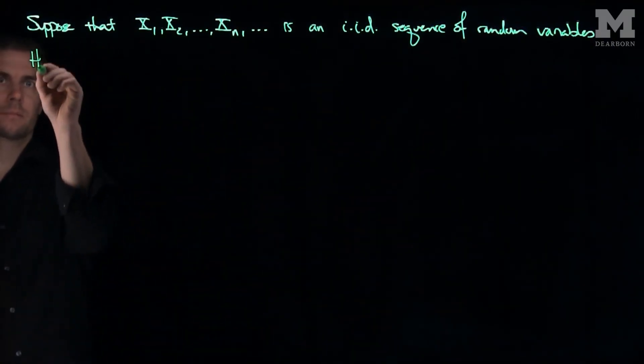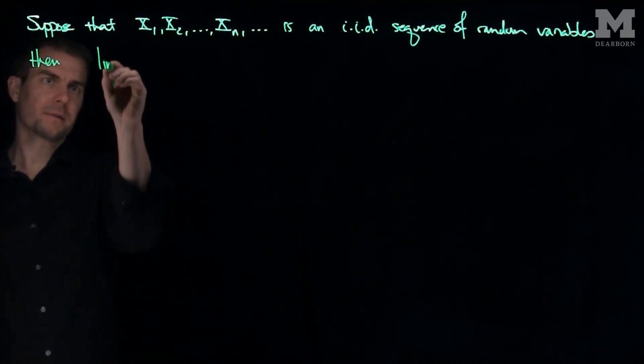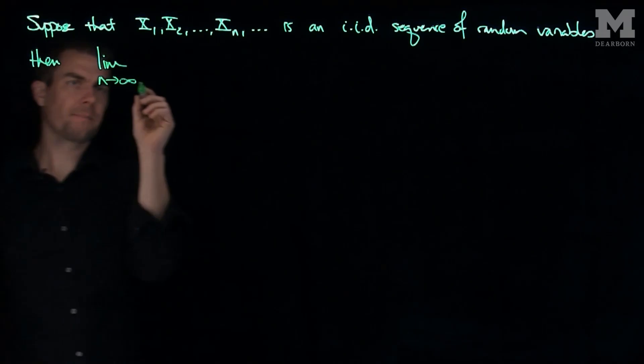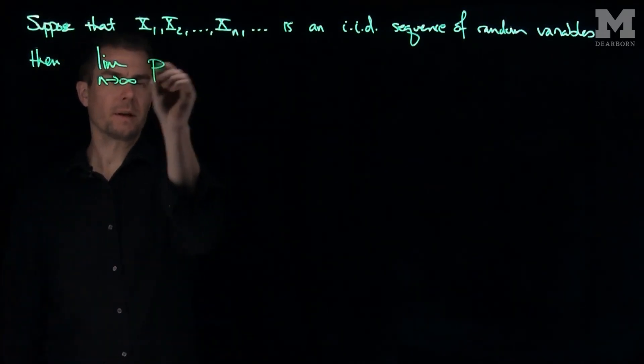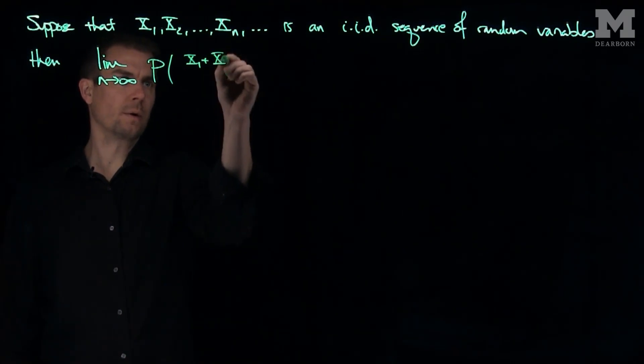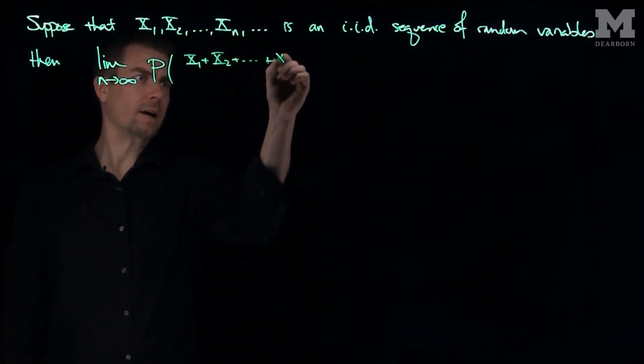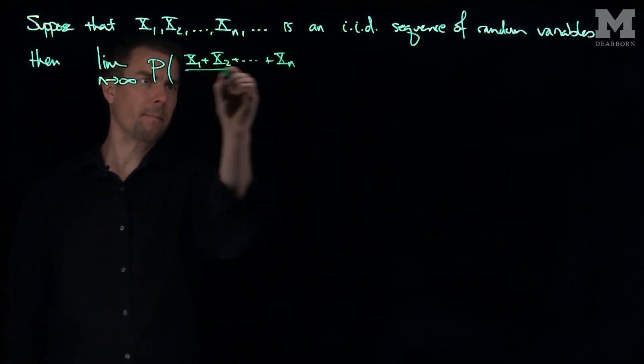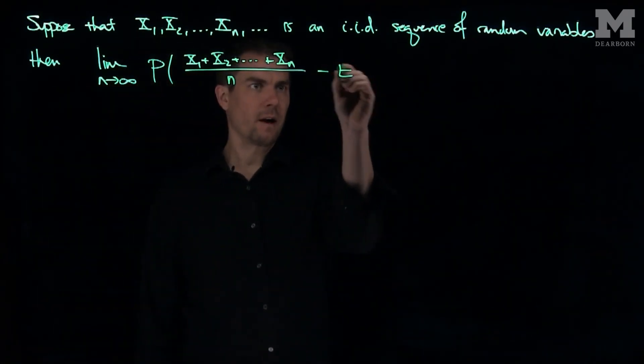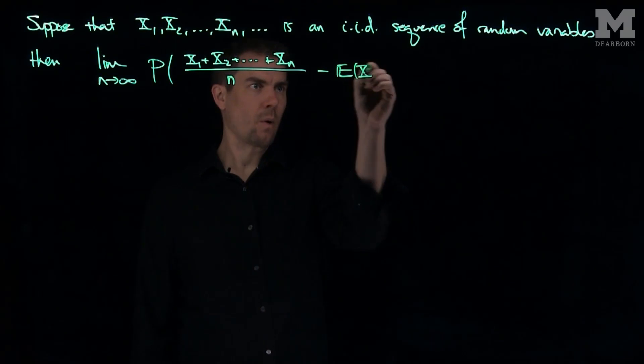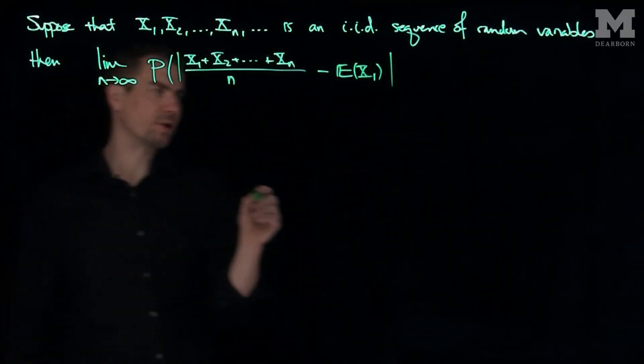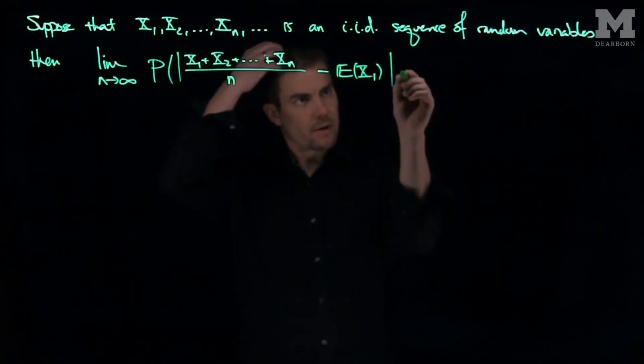Then the limit as n goes to infinity of the probability that x1 plus x2 plus xn, so the sum of the first n of them, divided by n, minus the expected value of x1, an absolute value. The probability of this expression is bigger than or equal to